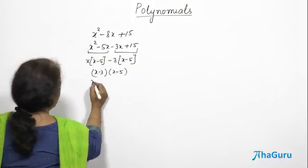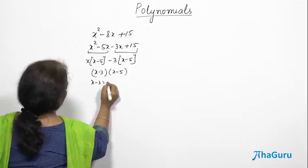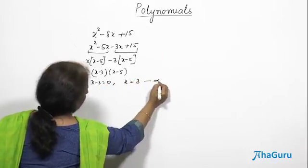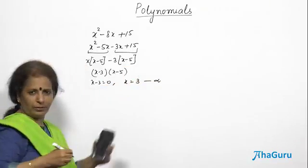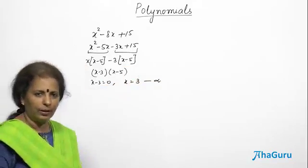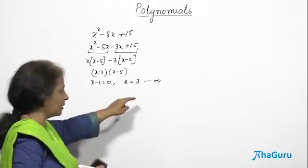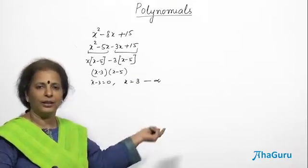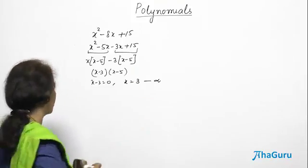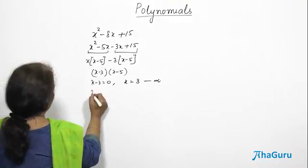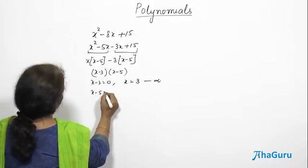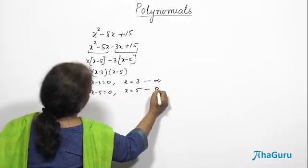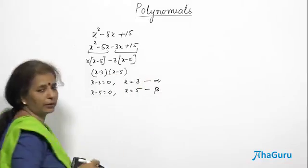What does this mean? x minus 3 equals 0 gives me x equals 3. And this is alpha. Then x minus 5 equals 0 gives me x equals 5. Let us put that as beta.